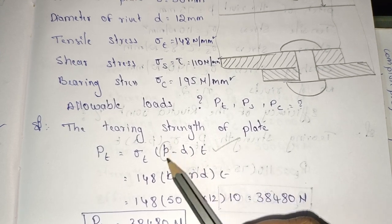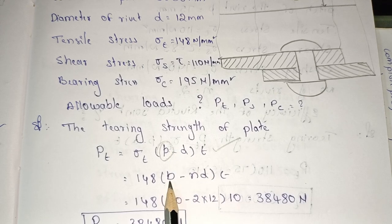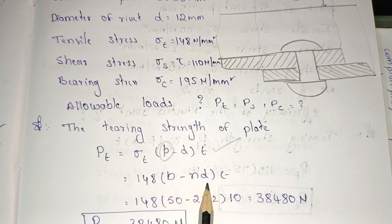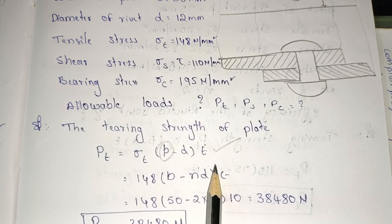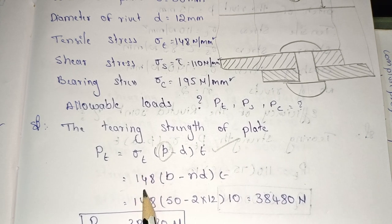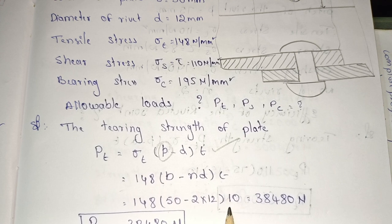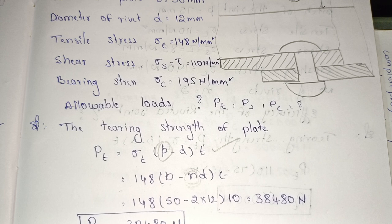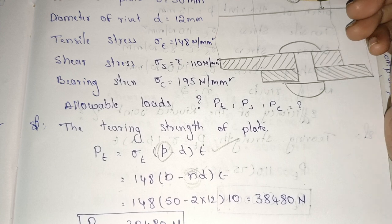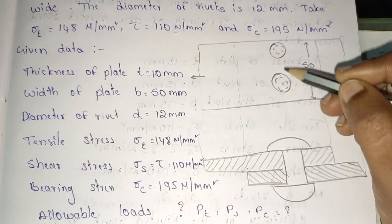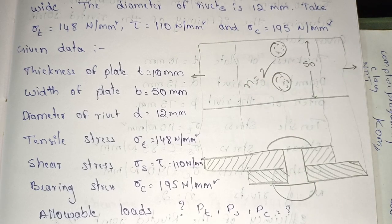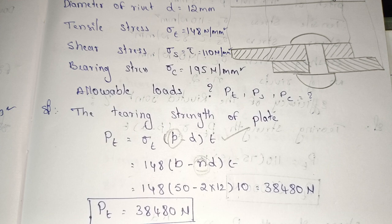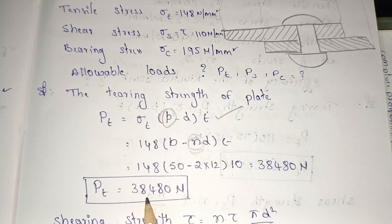So pitch value is width. Sigma T is 148, B is 50, N is 1 for single riveted lap joint — here we have a single riveted lap joint, not double. D is 12, T is 10. So pt = 148 × (50 − 1×12) × 10. We calculate pt = 38480 N.